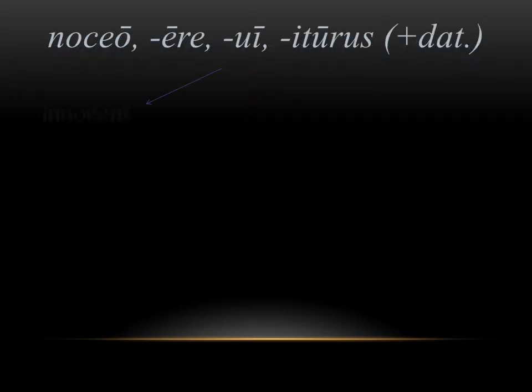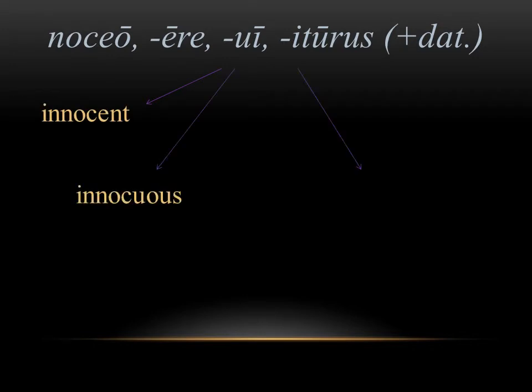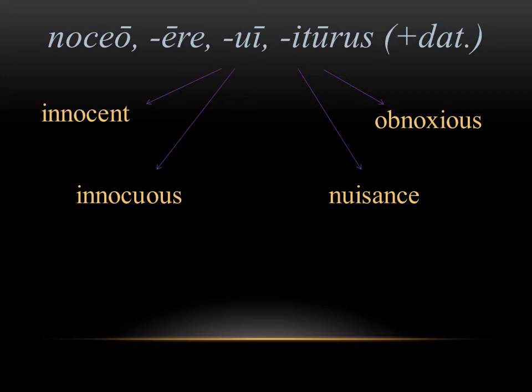Next we have nocere. In English we get a few derivatives from this — words like innocent, innocuous, nuisance, obnoxious — and they make sense because this verb means to do harm or to harm someone. You'll notice the vocab list shows plus dative, meaning it takes a dative object: to do harm to someone. This is actually related to necare/necare, which means to kill. So you can see the connection between to do harm and to kill.